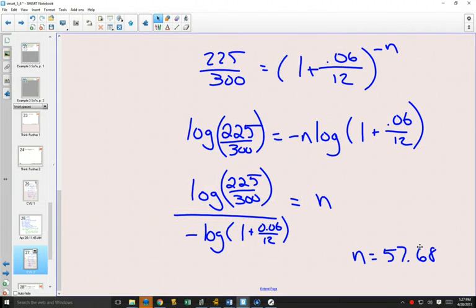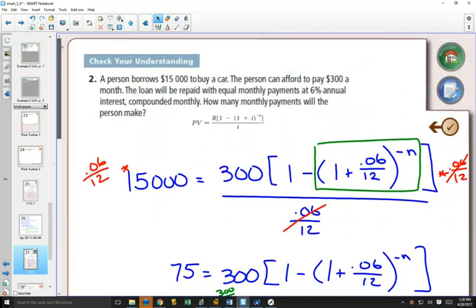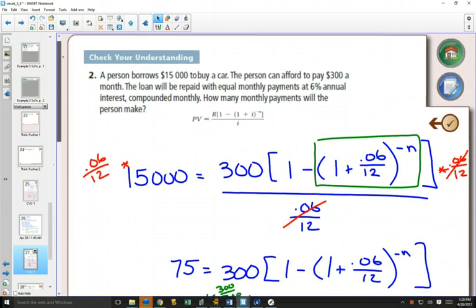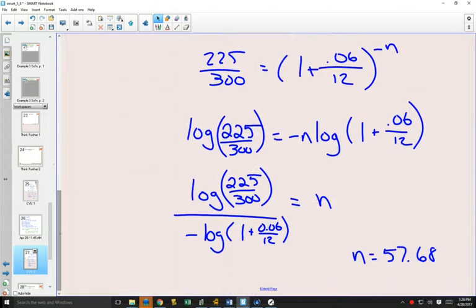So that N is the number of payments again. So the question was, the original question asked, how many monthly payments will that person make? So they're going to pay $300 a month, 57 months. 57 months is approximately five years, which is about the average length of a car loan. You pay a car off over five years is quite a reasonable amount of time.